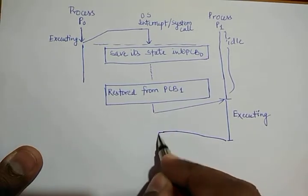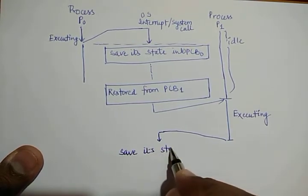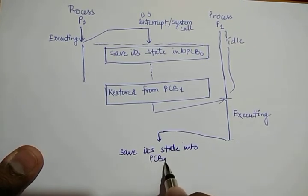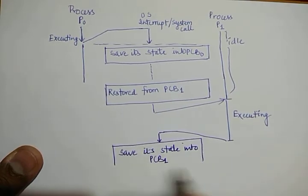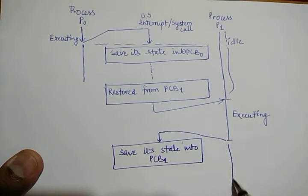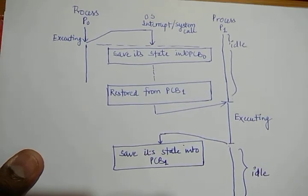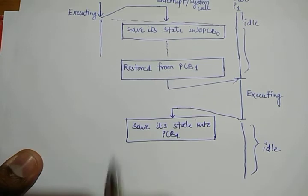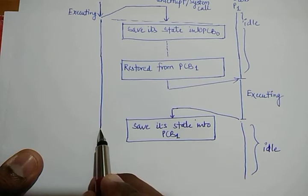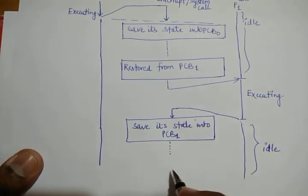Suppose after some time P1 gets an interrupt. It will save its state into PCB1. During this saving time, P1 remains idle, and P0 is also keeping itself in an idle situation, doing nothing.